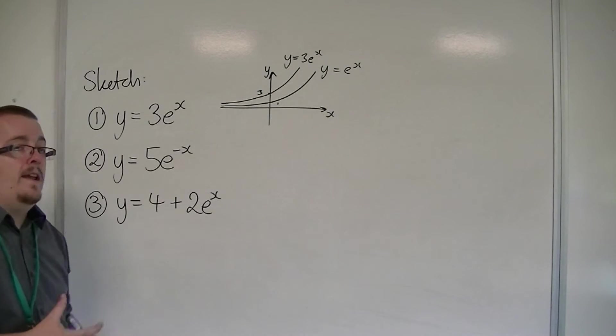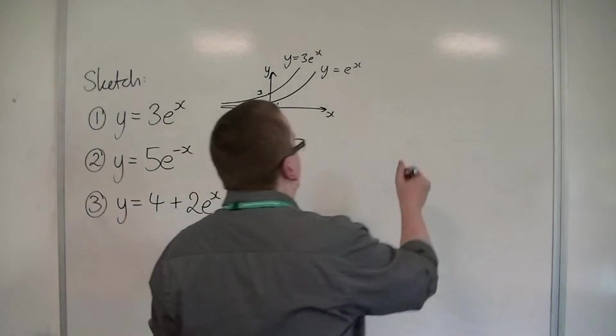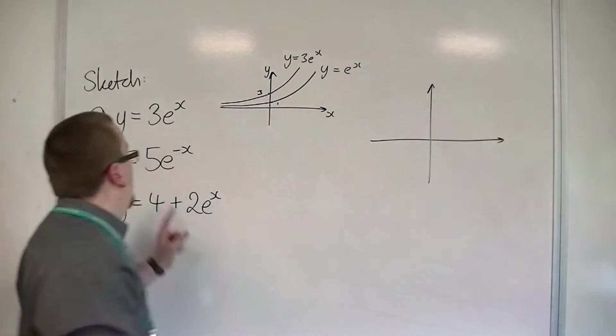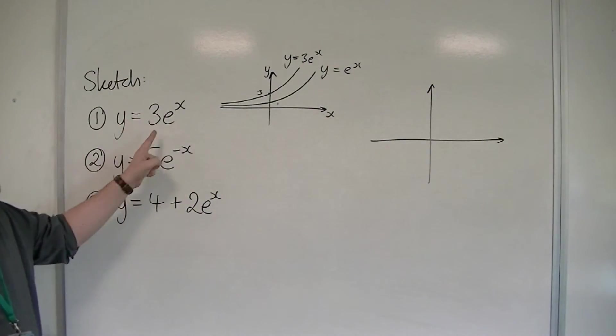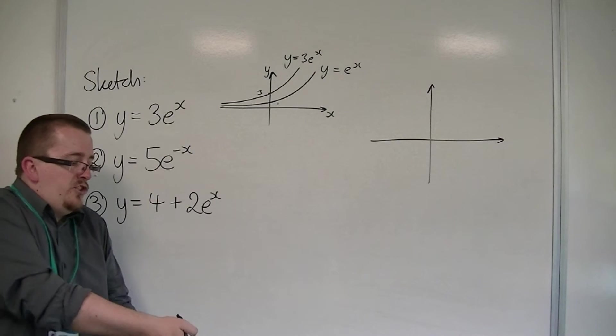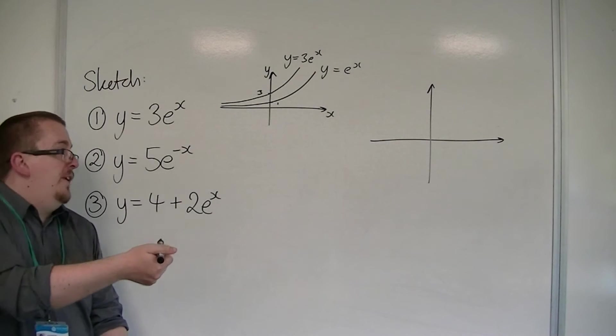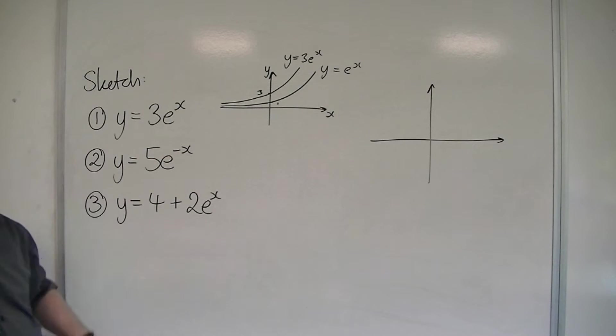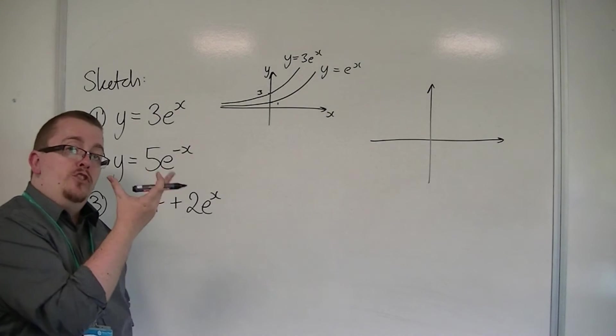Let's look at the second one, y = 5e^(-x). Let's think about what that 5 does. Well, in a similar way to the 3, the 5 is stretching the curve in the y-direction by a factor of 5. The minus sign in front of the x means that all the x-coordinates have changed sign.